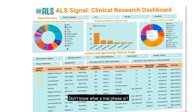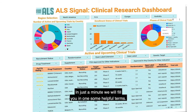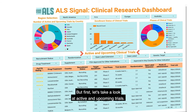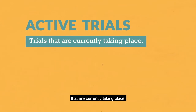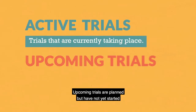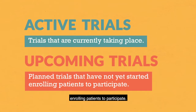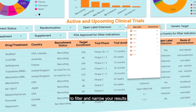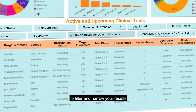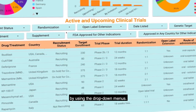Don't know what a trial phase is? No problem. In just a minute, we will fill you in on some helpful terms. But first, let's take a look at active and upcoming trials. Active trials refers to trials that are currently taking place. Upcoming trials are planned but have not yet started enrolling patients to participate. There are a series of data fields you can use to filter and narrow your results by using the drop-down menus.